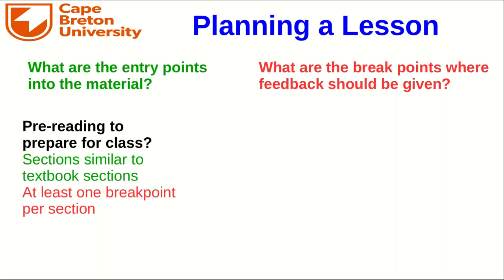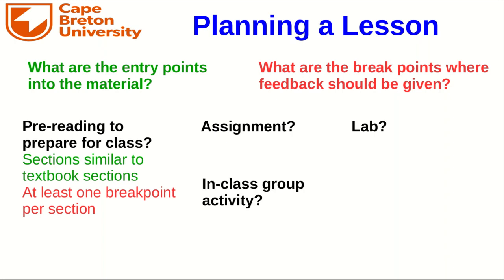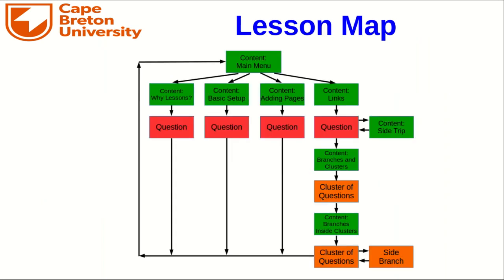You should also think about where there are break points where you should give feedback, because that tells you where to put questions in the lesson. I'll put at least one break point per section to keep students engaged, and whenever I encounter a difficult or important concept, I'll tend to put a question there to check students' understanding. But this will all be different if you're building an assignment, a lab, or an in-class group activity. Once you've planned out the lesson, unless it's got a very simple structure, it's probably a good idea to draw a map of it. Here is a map of this lesson, and at the moment you are here. If you draw a lesson map, you might consider doing it up nicely in a computer application and providing it to the students, perhaps on the main menu page of the lesson.